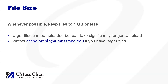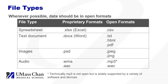Whenever possible, keep files to 1GB or less. File uploads depend on your local internet speed. Though files larger than 1GB can be accepted, they can take significantly longer to upload. If you need to upload a larger file, please reach out to e-scholarship at umassmed.edu for assistance. You are encouraged to convert all of your files into an open format. This table gives you a brief overview of some common open versions of proprietary software formats. Note the proprietary formats from the Microsoft Office Suite — the preferred open format for Excel files is CSV, and for Word documents is TXT or PDF format. UMass librarians may convert files into an open format if they are submitted in a proprietary format.